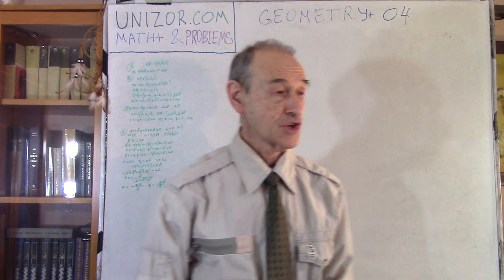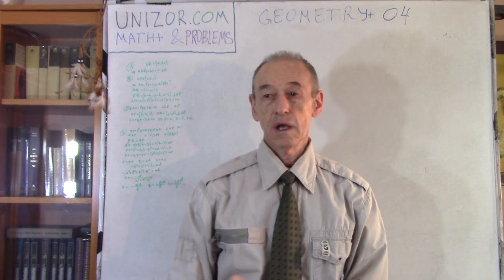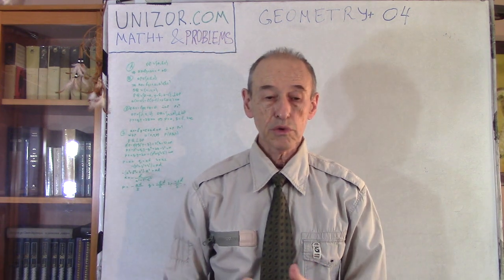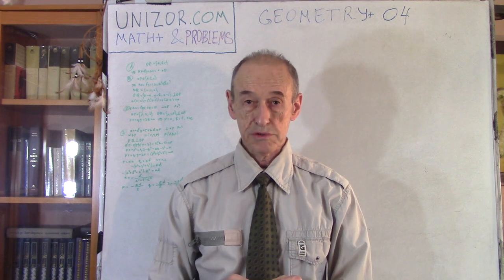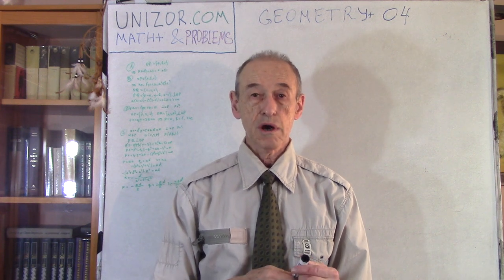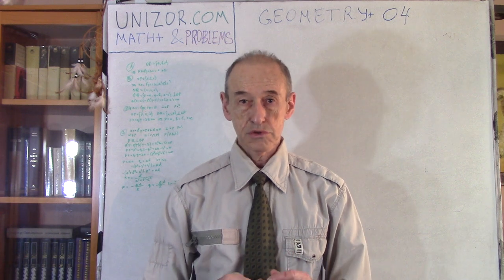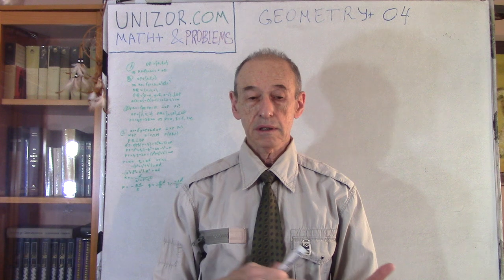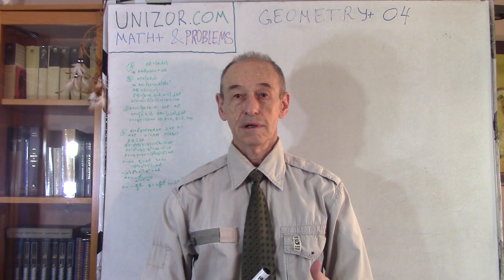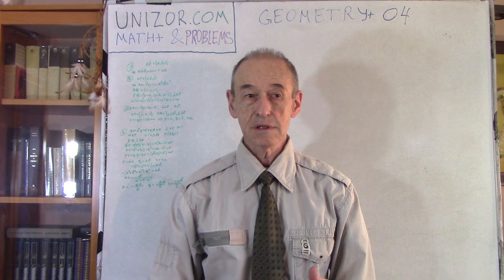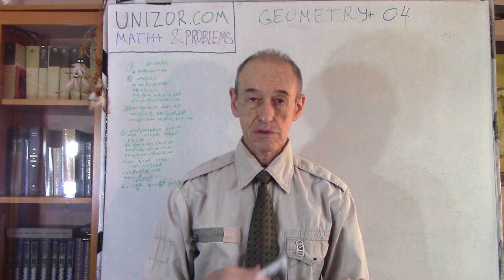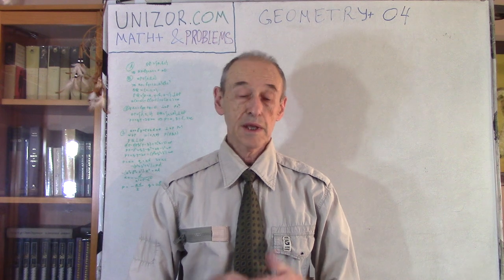This is Geometry 04, the fourth lecture of Geometry in the Math Plus and Problems course. Today we will talk about 3D, three-dimensional space in Cartesian coordinates. We will talk about planes and vectors which are normal — perpendicular — to these planes. If you have a vector which is normal to a plane, what is the equation of the plane in Cartesian coordinates? And vice versa: if you know the plane, how do you find the vector perpendicular to it at a certain point?